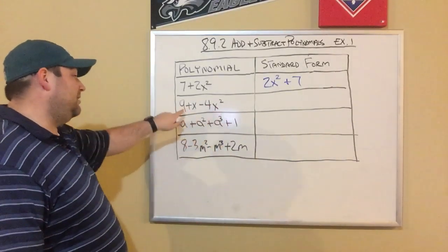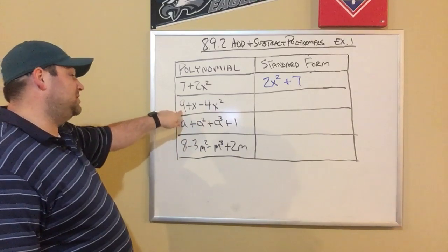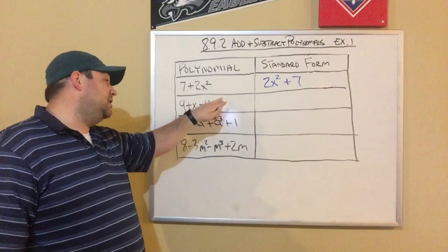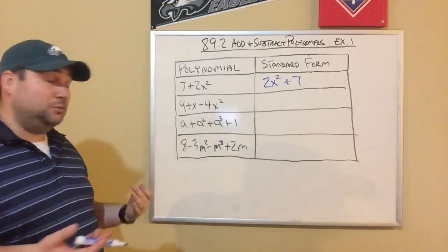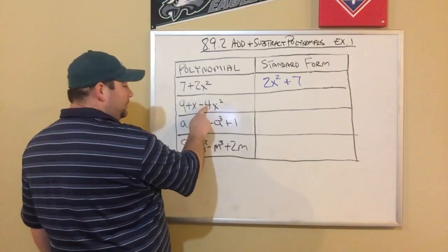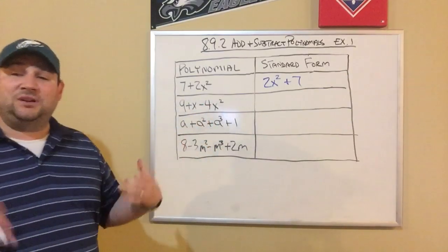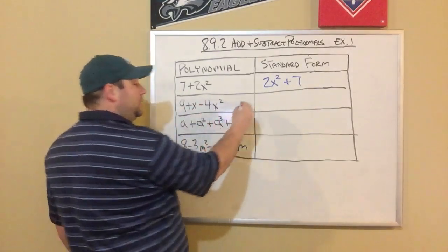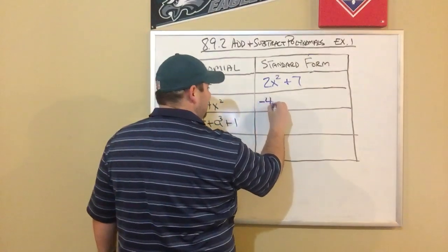Like if I look at my next one, I've got a 9, which is a degree of 0, I've got an x, which is a degree of 1, and then a negative 4x squared, which has a degree of 2. So that's going to be first, that's my highest term, and I'm going to work my way down. So first, I'm going to put, remember, the sign in front of the term stays with the term. Since this is minus 4x squared, I'm going to put this as a negative 4x squared.